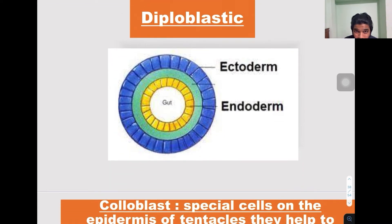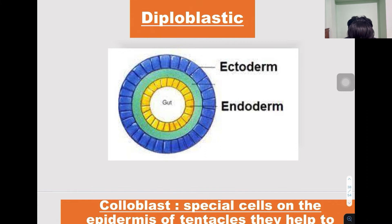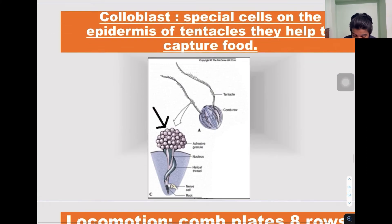They are diploblastic, not triploblastic. Externally the body is made up of ectoderm, internally there is endoderm, and in between there is mesoglia. There is no mesoderm present.